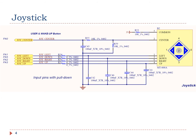Here is the schematic diagram, which shows the connections between the processor pins and the joystick. GPIO pins PA0, PA1, PA5, PA2, and PA3 are connected to the center, left, down, right, and up pins of the joystick, respectively.